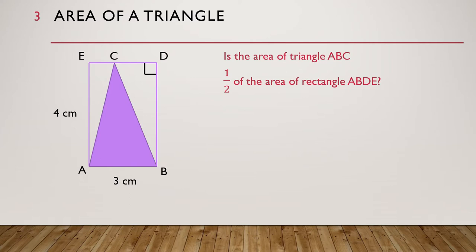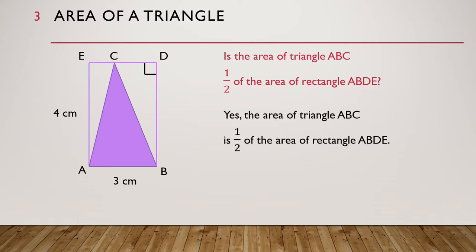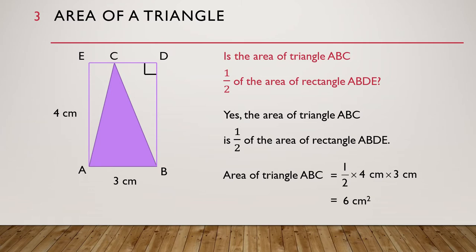The answer to the question is yes — the area of triangle ABC is half of the area of rectangle ABDE. Therefore, the area of triangle ABC is equal to half times 4 cm times 3 cm, which is equal to 6 cm².